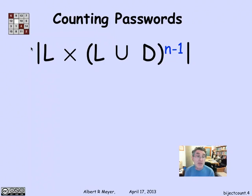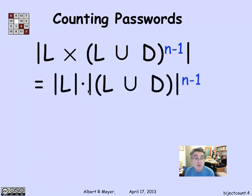We have an easy way to count this, because the size of this product, by the product rule, is the size of L times the size of L union D to the n minus first power.